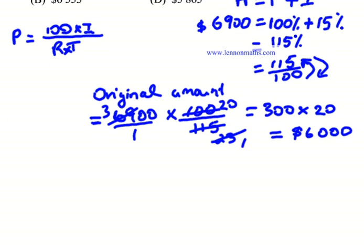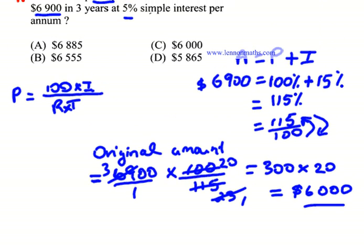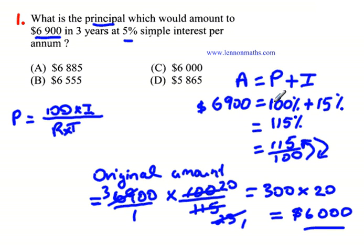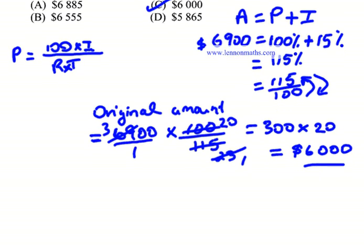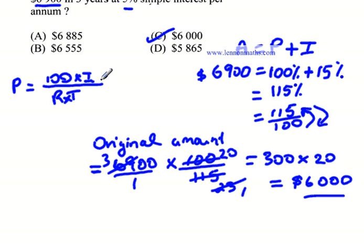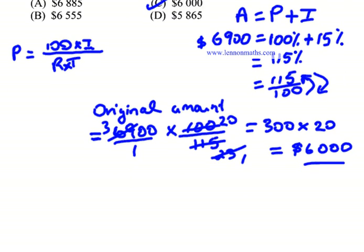So that's what we're looking for. The original amount is $6,000. The original amount, as noted before, is 100% — so we just found the principle, which is the original amount: 100%, or $6,000. We weren't able to use the other formula because we had the rate of 5% and time of 3 years, but we didn't have the interest in order to calculate the principle directly. So that formula couldn't work for us.